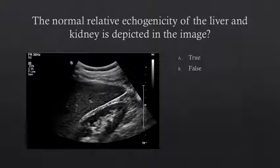Take a moment, read this question, and decide what you think the right answer is. As we just discussed, the normal relative echogenicity of the liver and kidney is that the kidney is hypoechoic to the liver. In this image, we see the kidney appears darker than the liver, and therefore this is the normal relative echogenicity of the liver to the kidney. So A, true, is the correct answer.